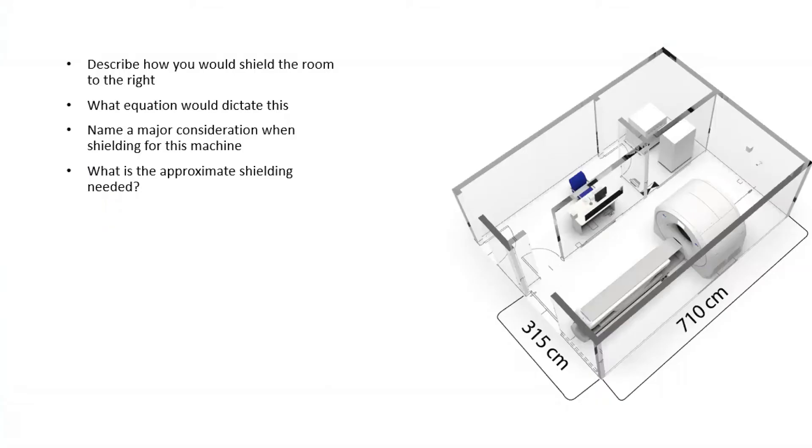Common questions you may be asked on your Part 3 oral exam are to describe shielding situations for various radiation machines. This includes linear accelerators, CTs, PET CTs, LDR, HDR, all these different types of rooms you need to know how to shield.